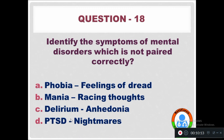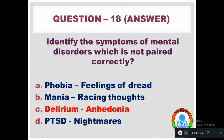Question 18: Identify the symptom of mental disorder which is not paired correctly. Phobia — feelings of dread. Mania — racing thoughts. Delirium — anhedonia. PTSD — nightmares. The symptom which is not paired correctly is delirium and anhedonia, because anhedonia is a symptom of depression.